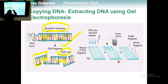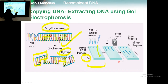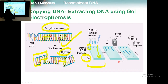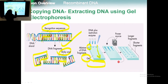After the DNA is cut, it will be separated on the gel electrophoresis. The gel electrophoresis is made of agarose gel with a specific pore size. The DNA will migrate from the origin to the other side of the gel — from where we apply the mixture of DNA fragments to the other end.